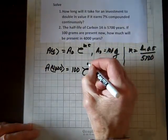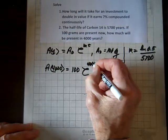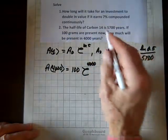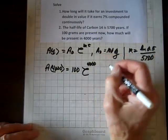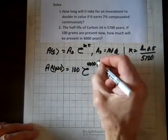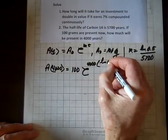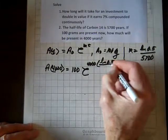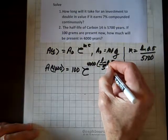...replacing t with 4,000. And replacing k with ln of 0.5 over 5,700.